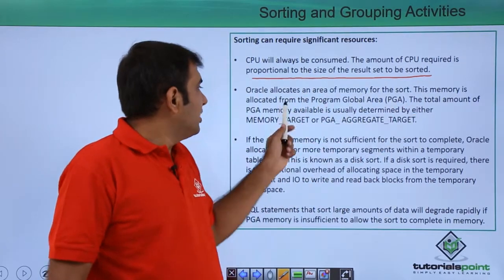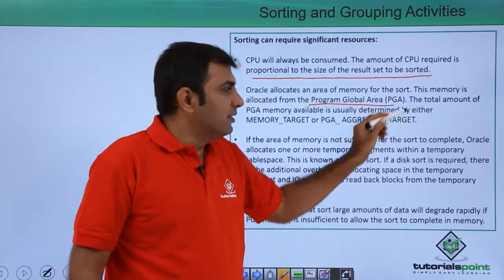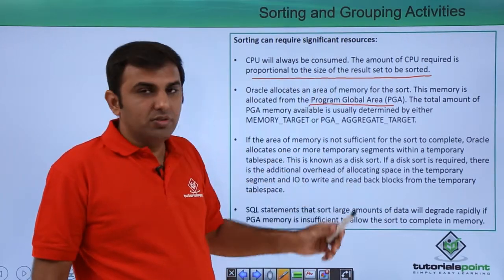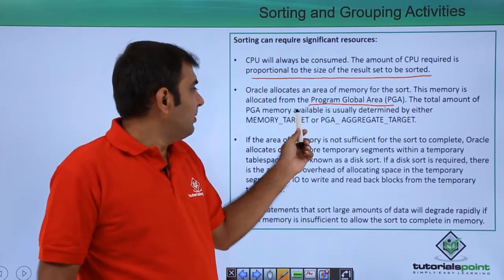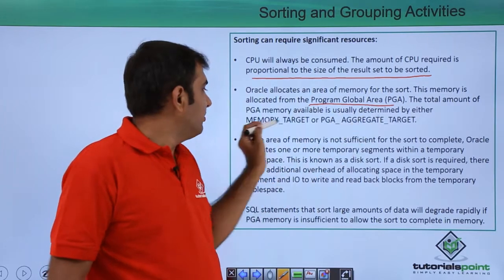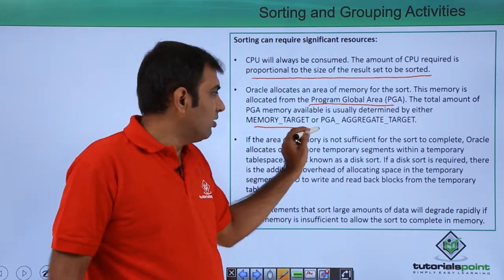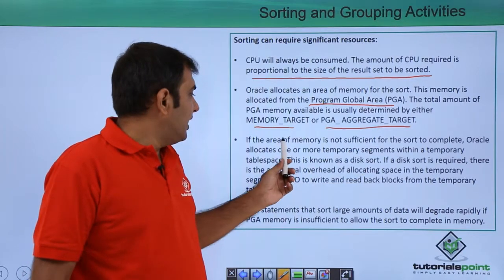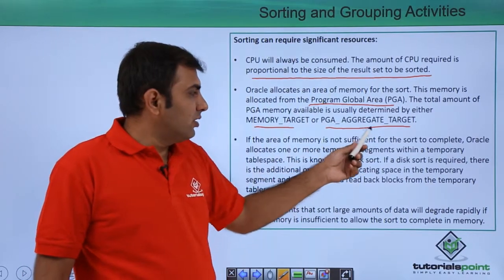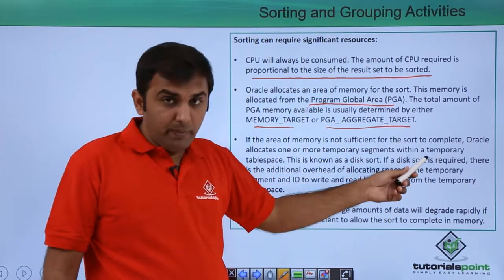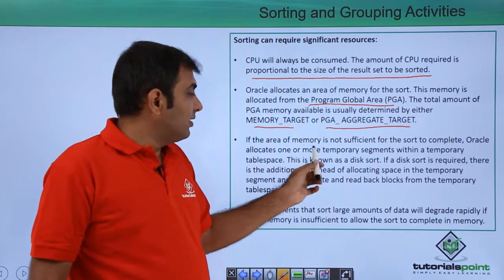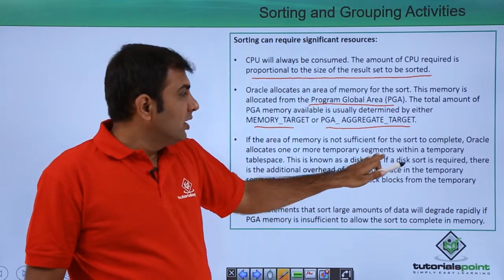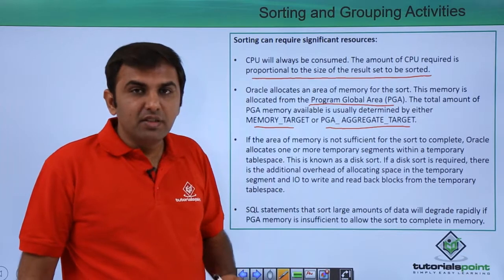Oracle allocates an area of memory for sorting. This memory is allocated from PGA. For the sorting operation, PGA is used. The total amount of PGA memory available is usually determined by the MEMORY_TARGET or the PGA_AGGREGATE_TARGET — these two parameters are set up. If the area of memory is not sufficient for the sort to complete, Oracle allocates one or more temporary segments from the PGA aggregate target.